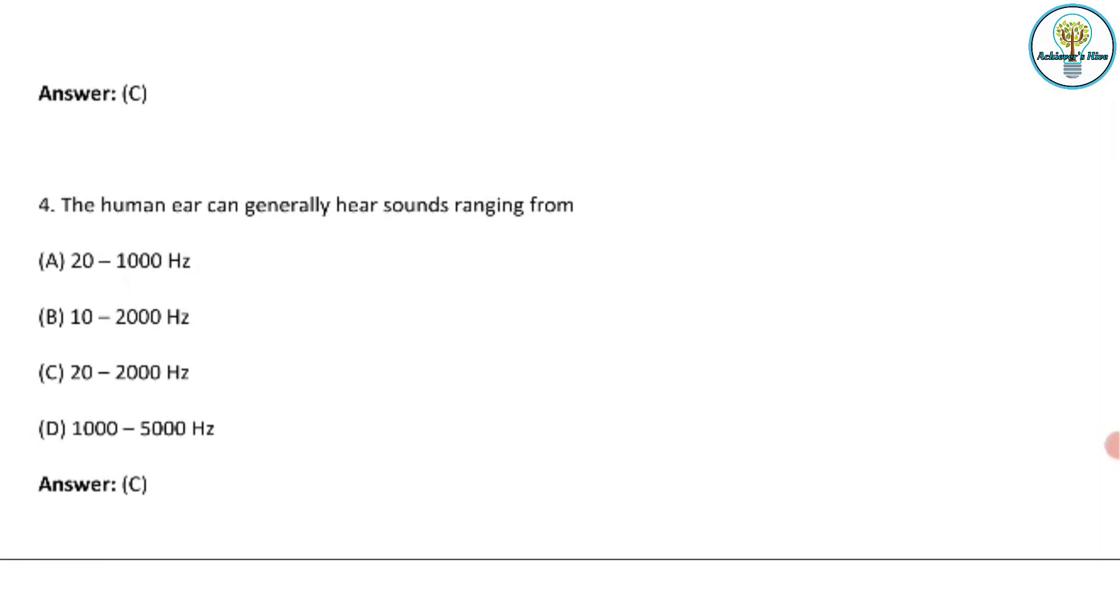The human ear can generally hear sound ranging from which one? Again, 20 to 2000 hertz. This question is based on the sensory activity, sensory motor activities which we perform. So our ear is one of the sense organs of our body. So 20 to 2000 hertz is the correct answer that a human ear can generally hear.